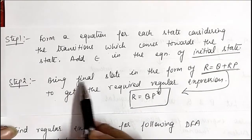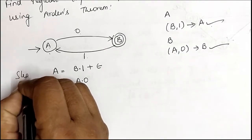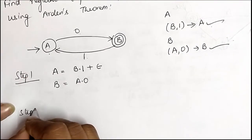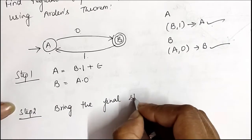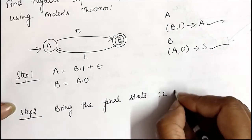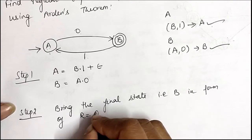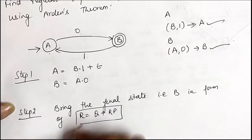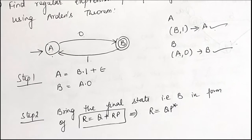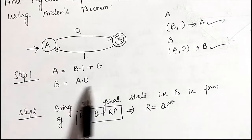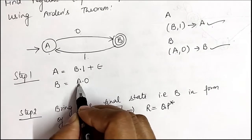Step 2: bring the final state into the form r = q + rp. The final state is B. We have B = A·0. We substitute the value of A, which is B·1 + ε, into this equation. Can we substitute this value of A? Yes.